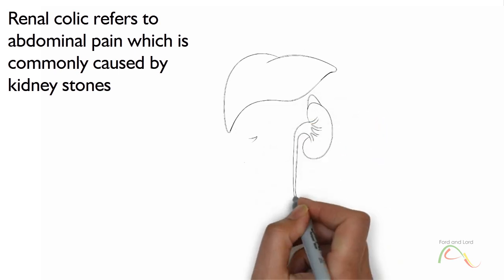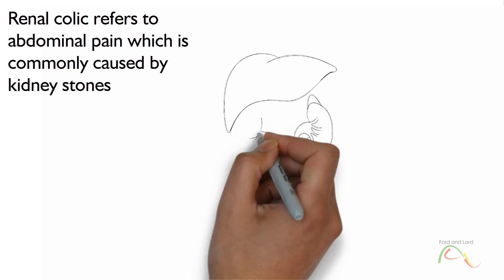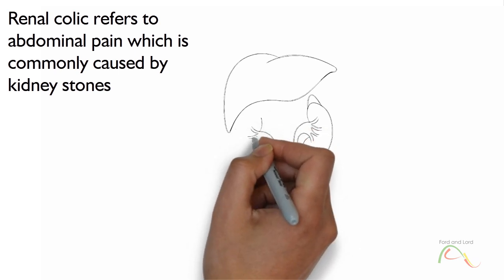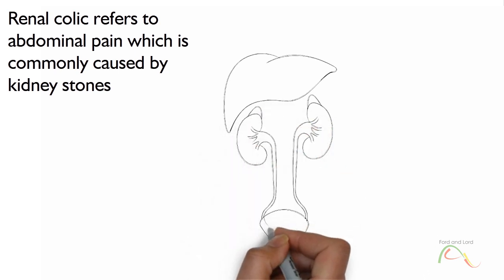The term colic or colicky pain is used to describe a form of pain that starts and stops abruptly. It occurs due to muscular contractions of a hollow tube, such as colon, ureter, or gallbladder.